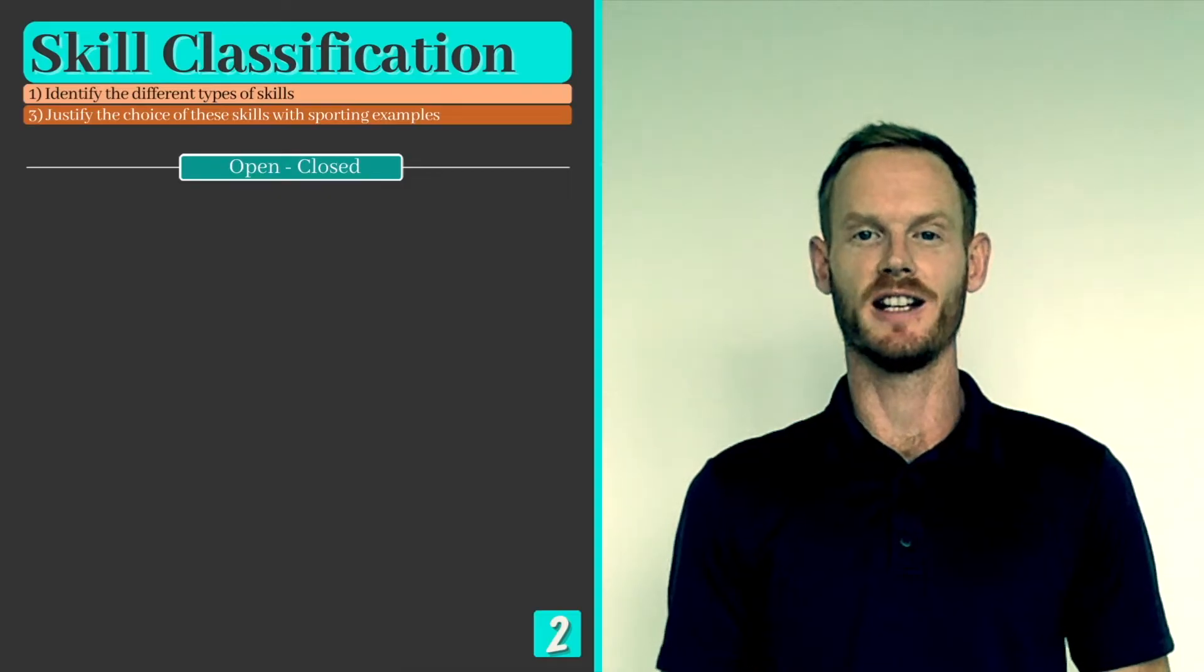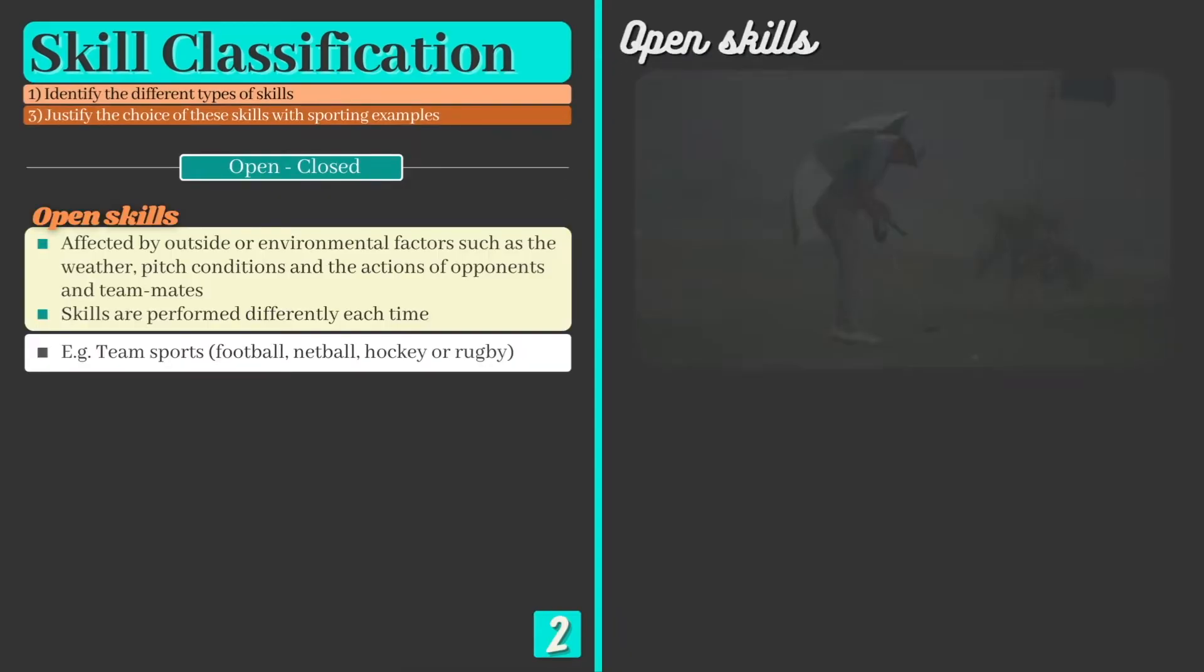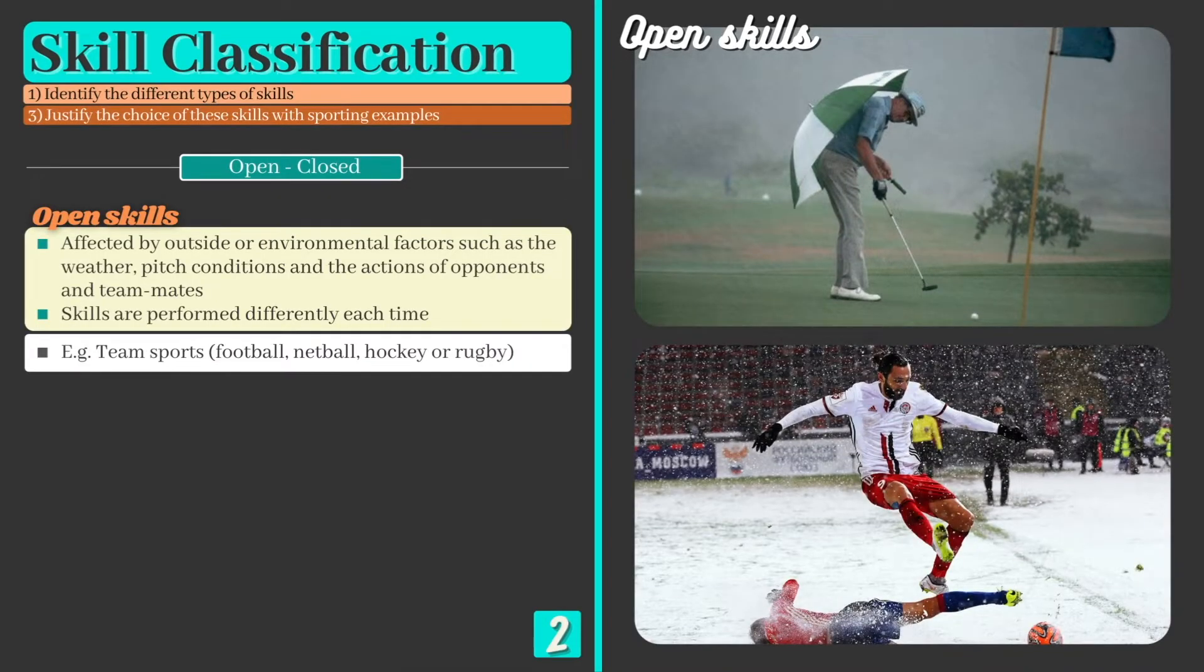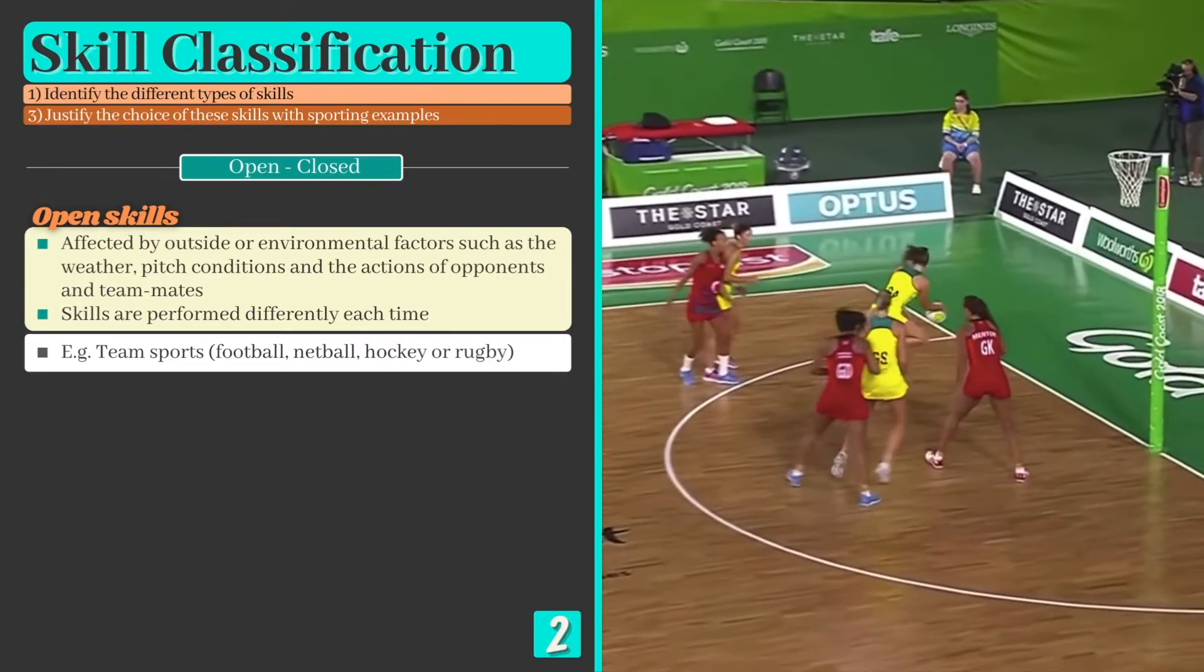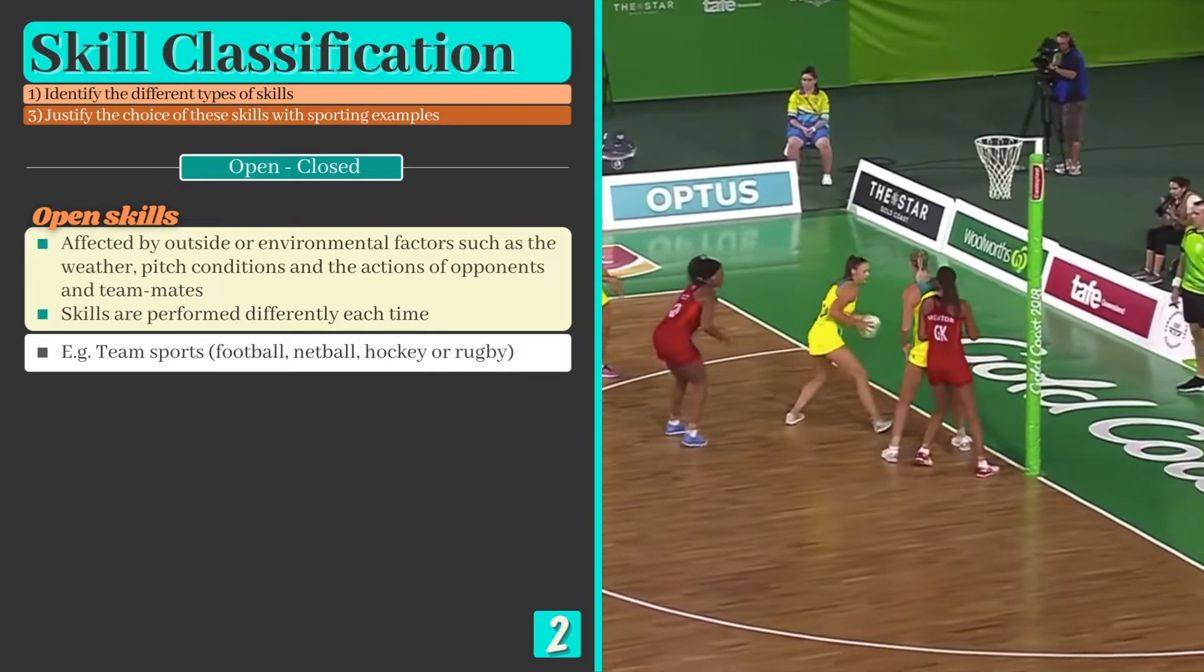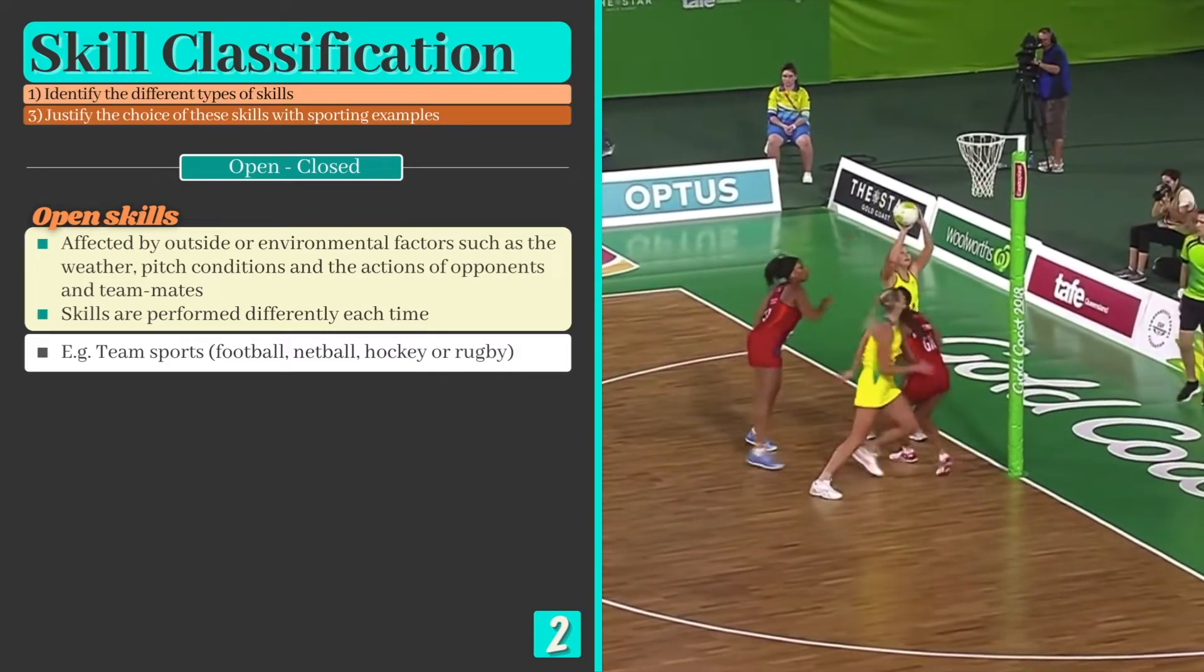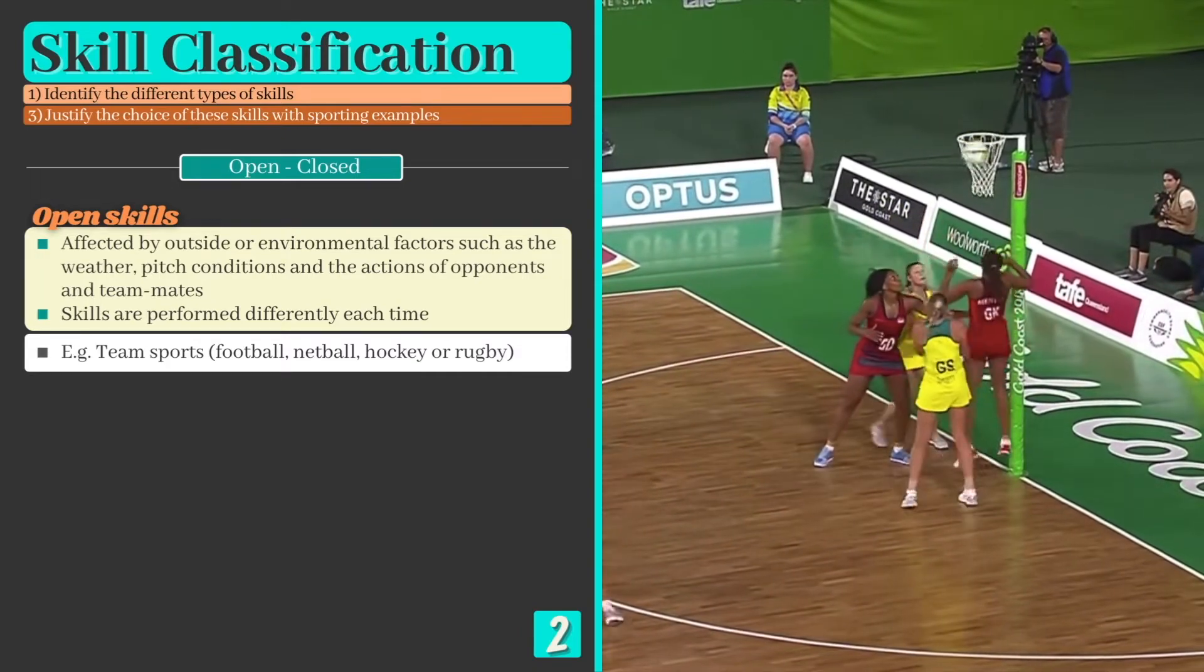Skills can also be classified as open or closed. Open skills are skills that are affected by outside or environmental factors such as the weather, pitch conditions and even more importantly the actions of opponents and teammates. Open skills are most obviously seen in team sports where performers need to react and adjust to situations that are constantly changing.